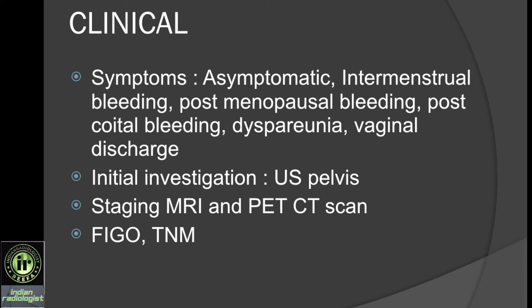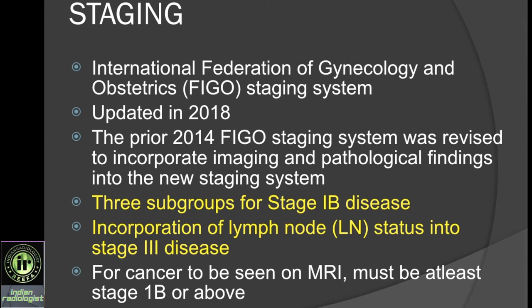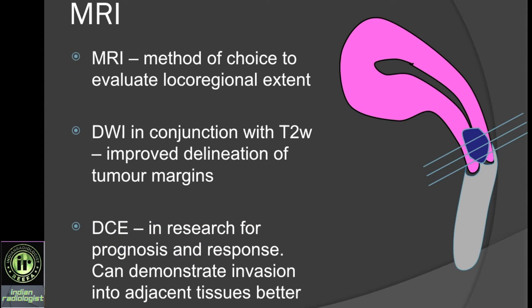Initial investigation is done using ultrasound and staging is done with MRI and CT scan. Staging is done using the FIGO method. Similar to endometrial cancers, FIGO staging for cervical cancers has been revised such that stage 1b now has three separate subgroups and lymph nodes have been incorporated into the current FIGO staging at stage 3. Also similar to endometrial cancer, previously radiology was not part of FIGO staging. MRI is the method of choice for locoregional extent. Unlike endometrial cancers, dynamic contrast enhanced sequence is still a research tool — it can demonstrate invasion into adjacent tissues better, but is not recommended for routine staging of cervical cancer, so you can perform MRI without administering contrast. Diffusion imaging on the other hand is helpful and together with T2-weighted images helps to delineate the tumor better.